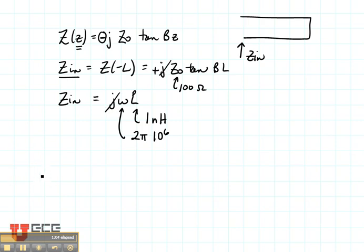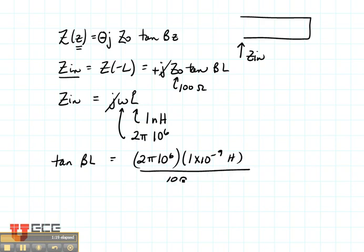And we're going to be left with tangent of beta L is going to be equal to omega, which is 2 pi times 10 to the 6, times my inductance, which is 1 times 10 to the minus 9th Henry's, divided by Z zero, which is 100 ohms.